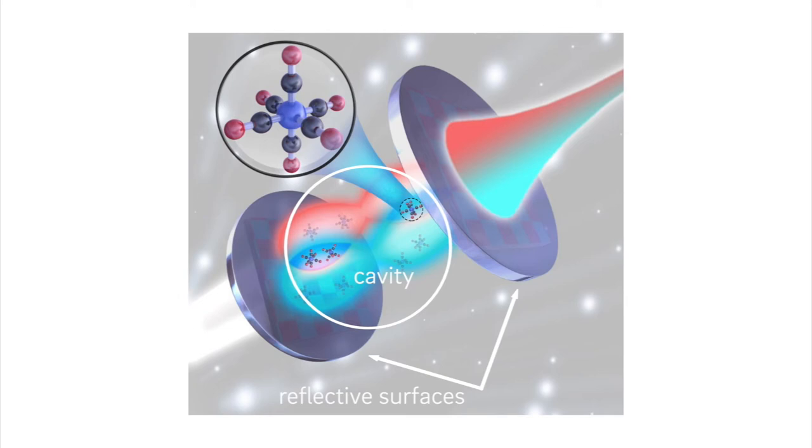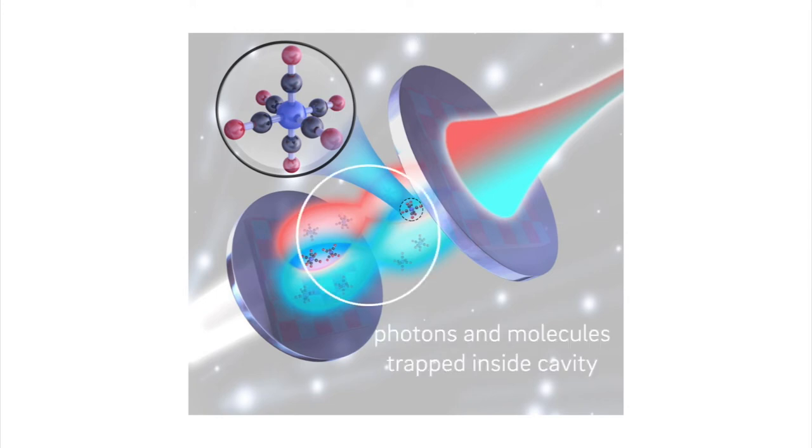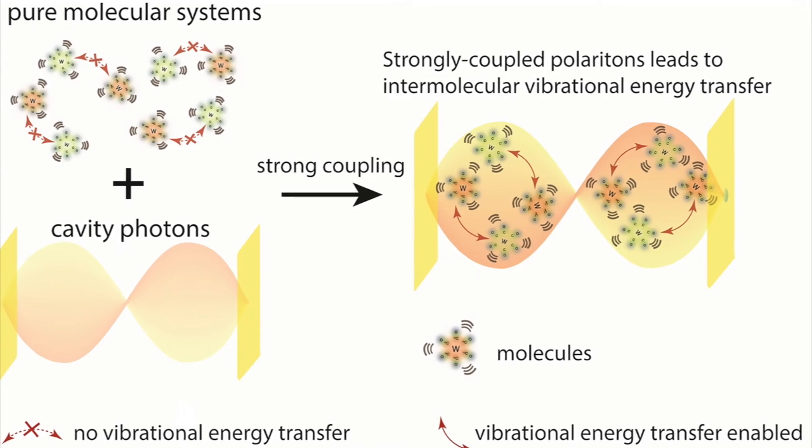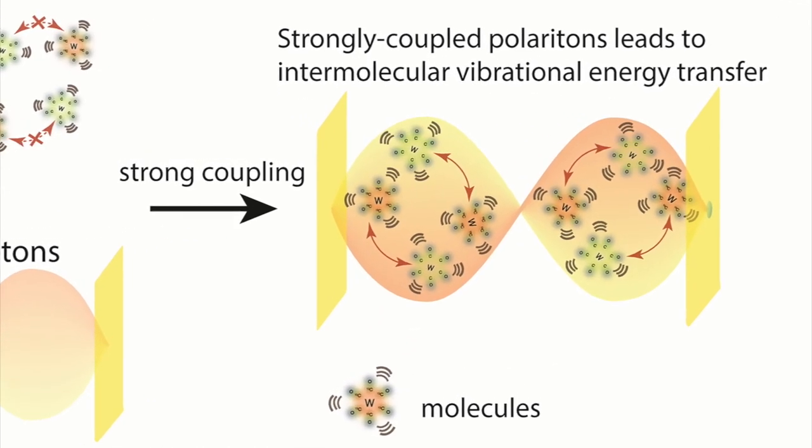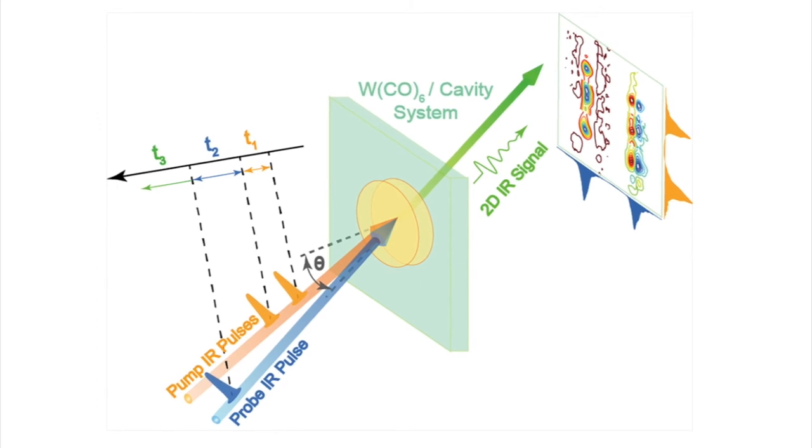Once the cavity is formed, it can trap photons inside. And then if we inject some molecule inside, the cavity traps both photons and molecules. When they are both trapped, there is nothing else that they can do other than interacting with each other, therefore hybridize with each other, forming the so-called polaritons.